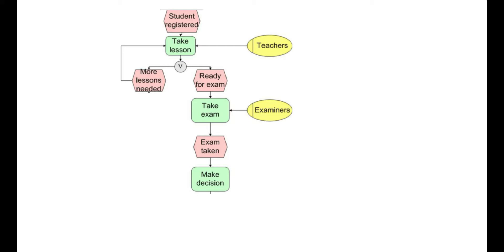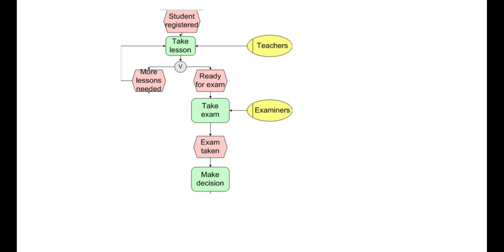If the right sub process is chosen the student will first take an exam. This is a function for which the unit examiners is responsible. When the exam has been taken the next function is to make a decision about the outcome of the exam. Did the student succeed or fail?